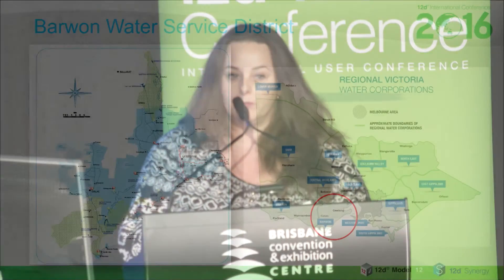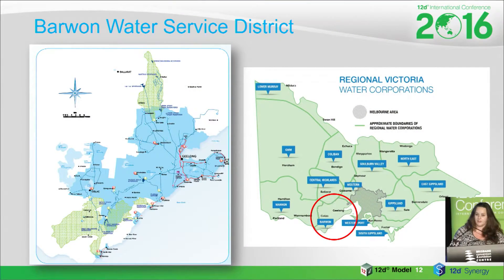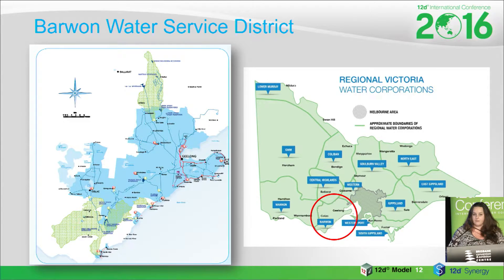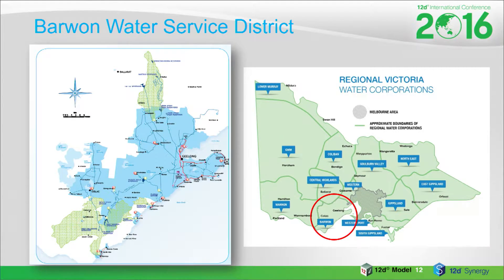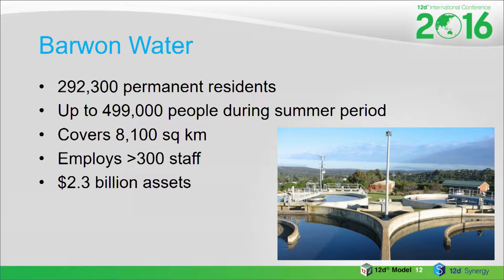Just a little bit about Barwon Water before I give you an overview of a couple of projects we've worked on recently. Barwon Water is a regional water authority situated in the southwest of Victoria around the city of Geelong, Bellarine Peninsula, and we extend as far west as the coastal town of Apollo Bay on the Great Ocean Road. We cover an area of approximately 8,000 square kilometres and we have a permanent residency of 300,000 people.